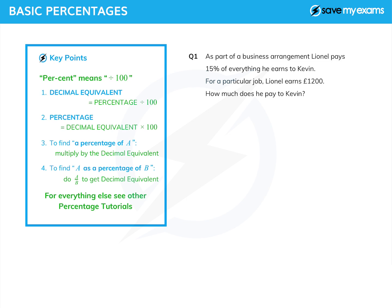Question one: as part of a business arrangement, Lionel pays 15% of everything he earns to Kevin. For a particular job, Lionel earns £1200. How much does he pay to Kevin? We're trying to find 15% of £1200, so we use the decimal equivalent. The decimal equivalent of 15% is 15 over 100, which is 0.15. 'Of' always means times, so 0.15 times 1200 gives us £180.